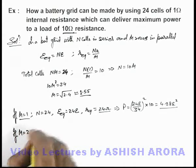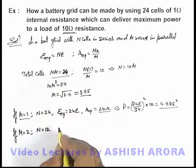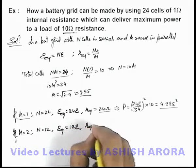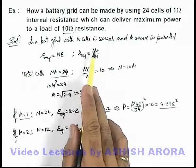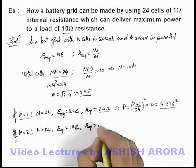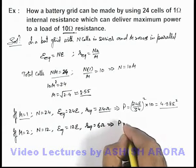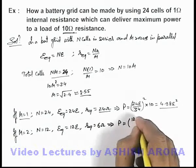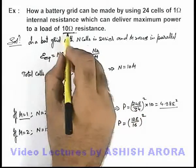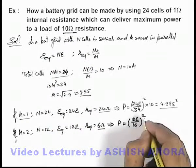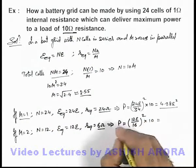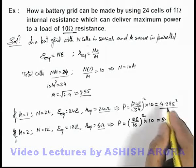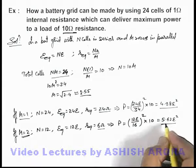For m = 2, the value of n will be 12, since total cells are 24. The equivalent EMF is 12E, and the equivalent internal resistance is 12×1/2 = 6 ohms. The power consumed by the external resistance is I²R, where current is 12E/16, because 10 ohms is in series with 6 ohms, multiplied by 10. Simplifying gives a power of 5.62E².